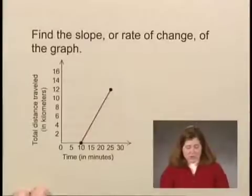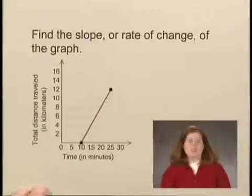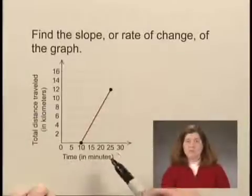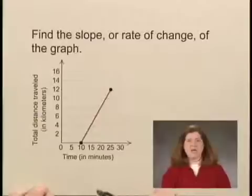To find the slope or rate of change of a graph, we can use any two points on the graph. But since this graph has axes that are labeled with units, we can give the rate of change in units as well.